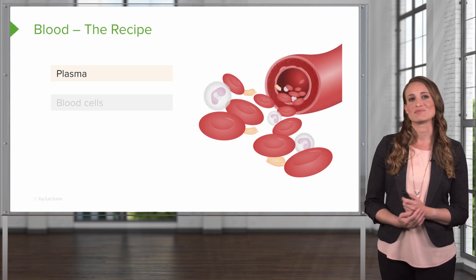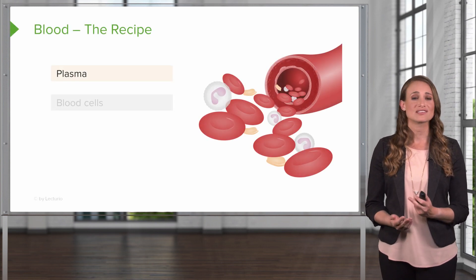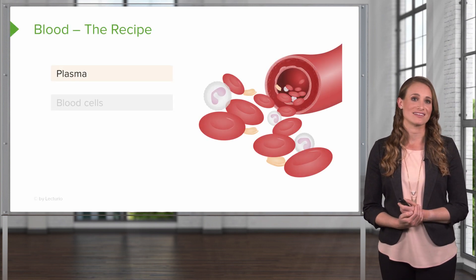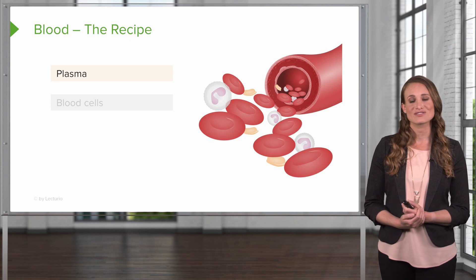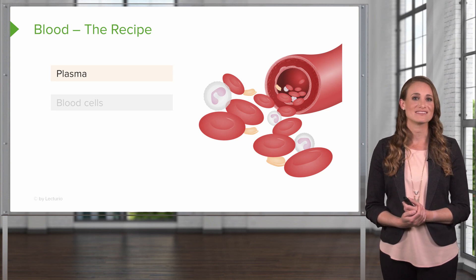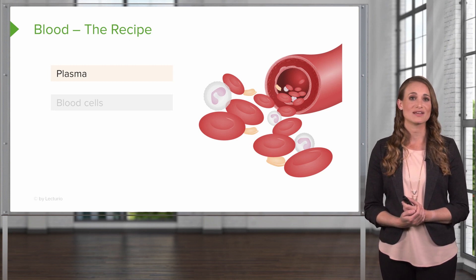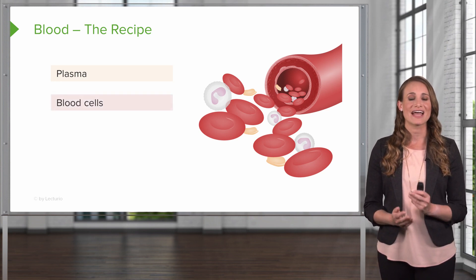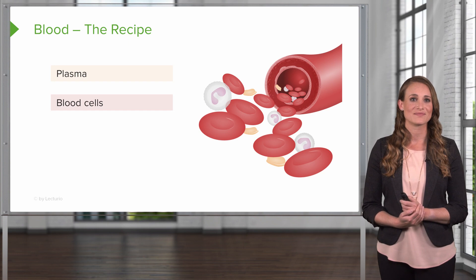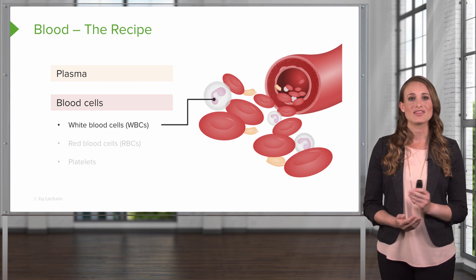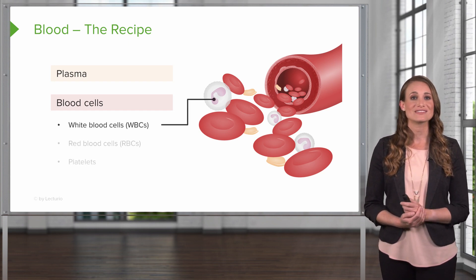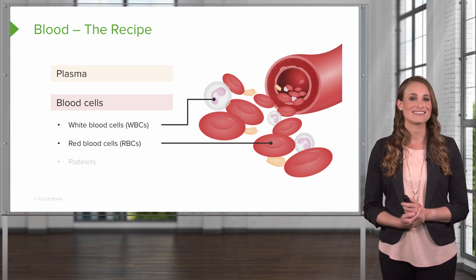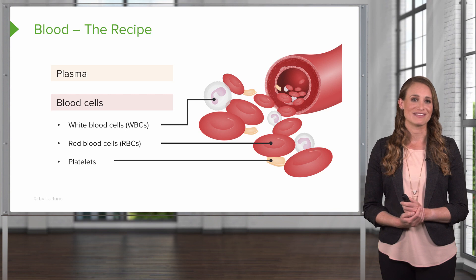What's the recipe for blood? It's composed of two things: plasma, which is a yellowish fluid that contains nutrients, proteins, hormones and wastes, and blood cells. In the blood cells we see white blood cells, red blood cells, and platelets.